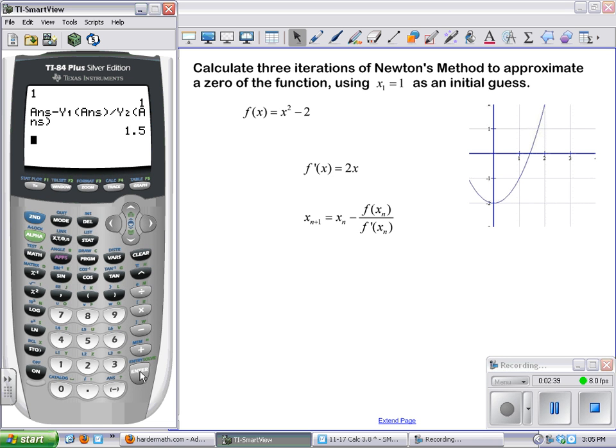Because now 1.5 is my answer, so if I repeat that process it's going to find x sub 3. That's my third iteration, and you can do a fourth iteration and so on just by hitting enter. And you can see that after just four iterations we're very close to what the actual answer would be.